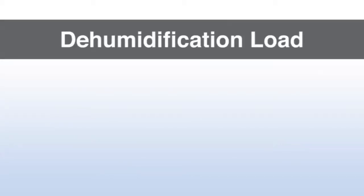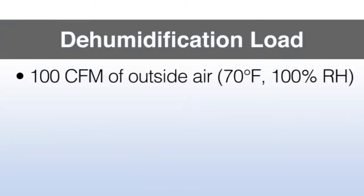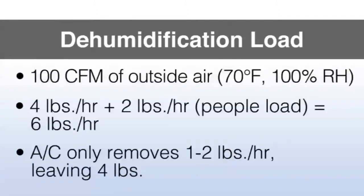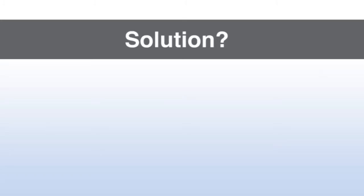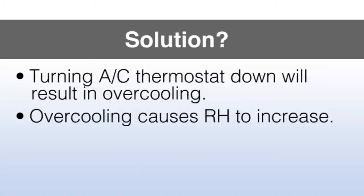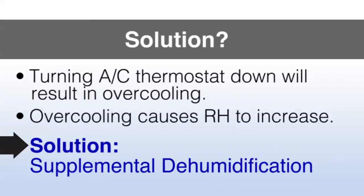To summarize, we'd like to look at what is the dehumidification load that needs to be removed. 100 CFM of outside air at 70 degrees and 100% relative humidity is 4 pounds from the infiltration plus the people load of 2 pounds, which totals 6 pounds per hour. The AC is only removing 1 to 2 pounds, leaving 4 pounds left. Currently, many recommend that the AC thermostat simply needs to be turned down, making the AC run more. The result is over-cooling, and as you over-cool, relative humidity rises versus actual water content. So even though we may reduce the moisture in the air, our relative humidity has the potential to rise by 6%. Every degree of temperature decrease, the RH increases by about 2%.